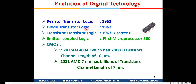Then came diode transistor logic, which was also discrete. Then came transistor-transistor logic, in which ICs started coming up — integrated circuits with NAND gates, NOR gates. Such ICs started coming into production. They are still available in the market at a pretty cheap rate. A chip like the 7400, which has four two-input NAND gates, costs around 10 to 20 rupees, and these TTL gates are very widely used even today.